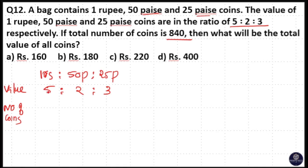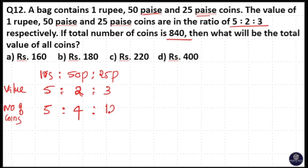Let me take this 5 as 5 rupees — if I have 5 rupees, that means 5 number of 1 rupee coins will be there. If I take 2 rupees for the 50 paisa coins, the number of 50 paisa coins is equal to 4 (2 into 2). Let me take 3 rupees for the 25 paisa coins — 3 rupees means number of 25 paisa coins is 3 into 4 = 12.